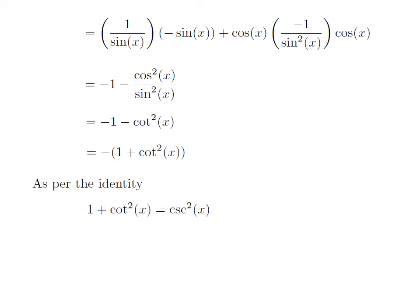As we know the identity: 1 plus square of cotangent of x is equal to square of cosecant of x. To see how to prove this identity, please check the card appearing in the upper right corner — the URL of that video is also given in the description. So the differentiation of cotangent of x with respect to x is equal to minus square of cosecant of x.